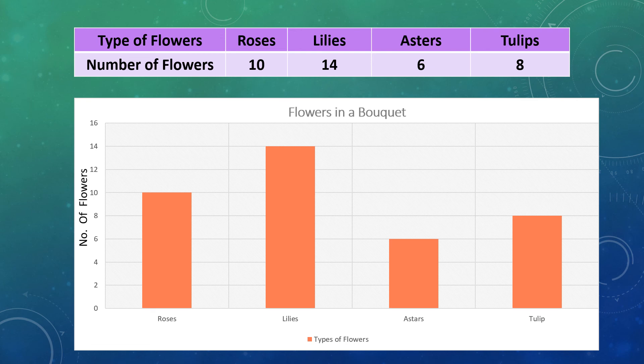We should keep in mind that the width of all the bars should be the same and the space between consecutive bars is always the same. So, this is the way we draw a bar graph for given data.